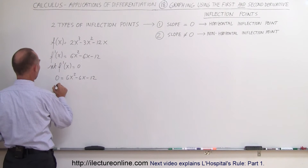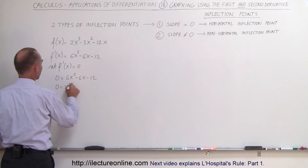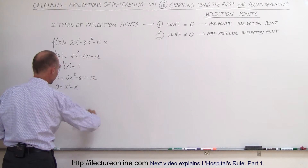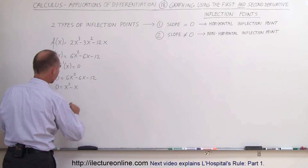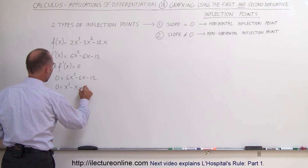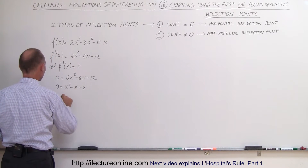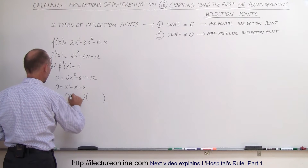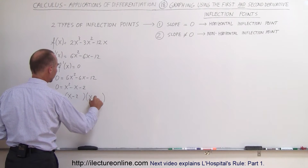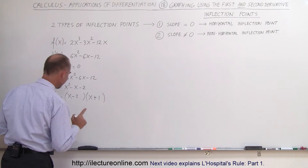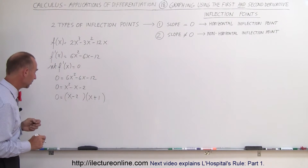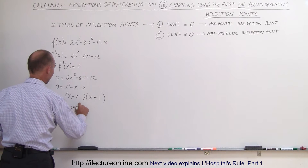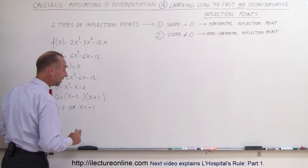Divide both sides by 6, we get zero equals x squared minus x minus 2. So, which means we have zero is equal to, if we factor that, we get x minus 2 and x plus 1. So that means that x is equal to 2 or x is equal to negative 1.